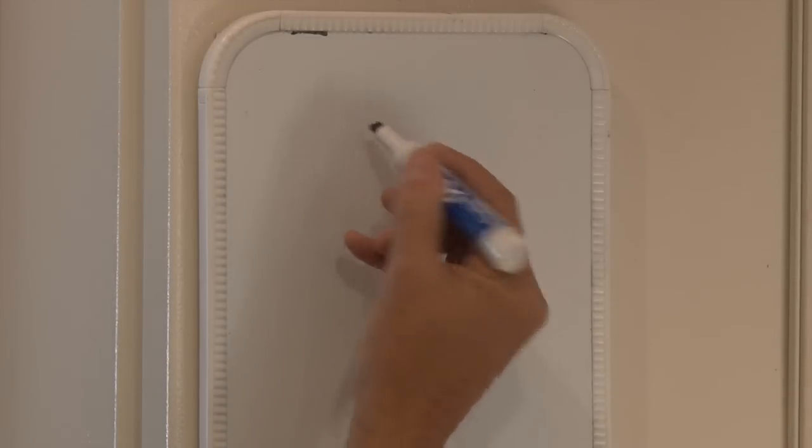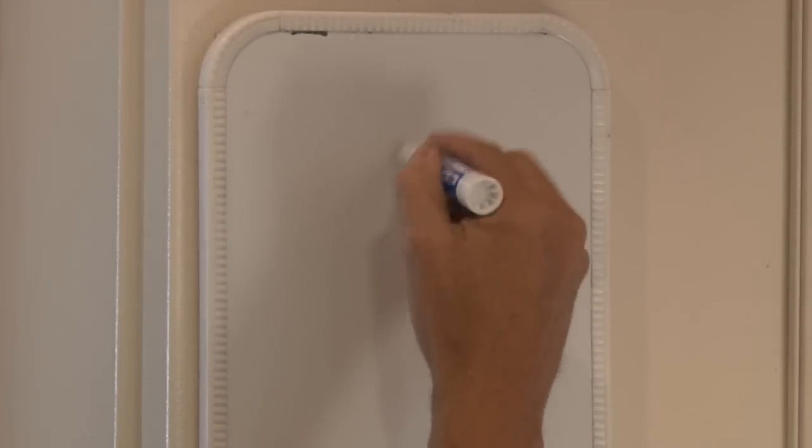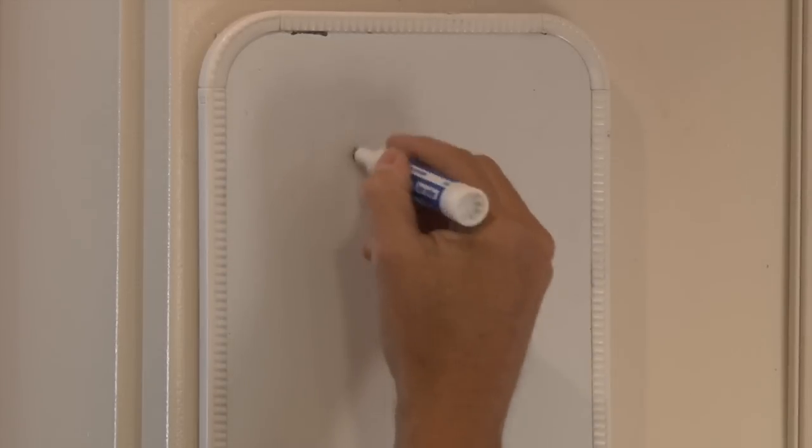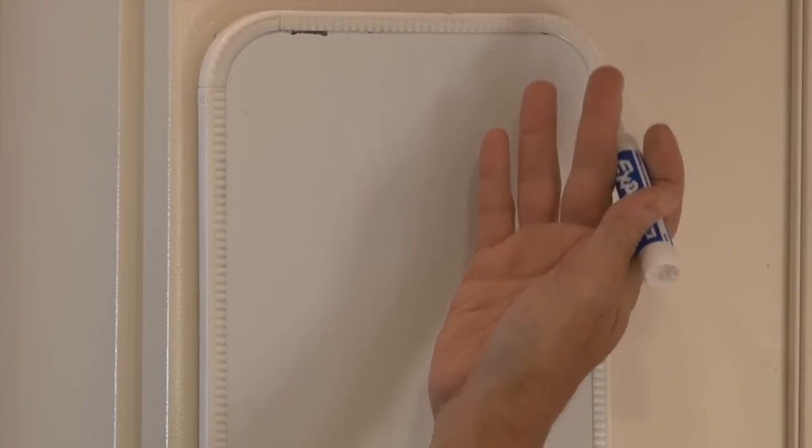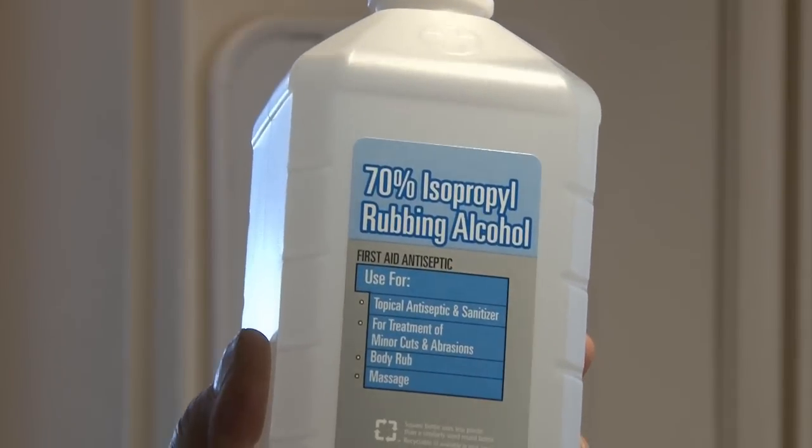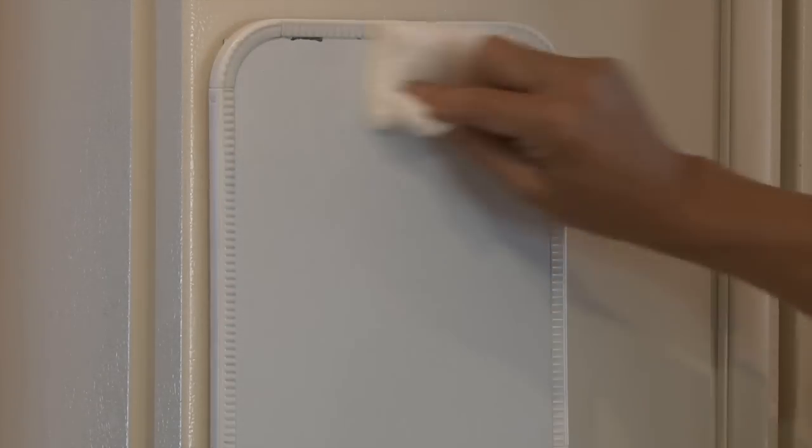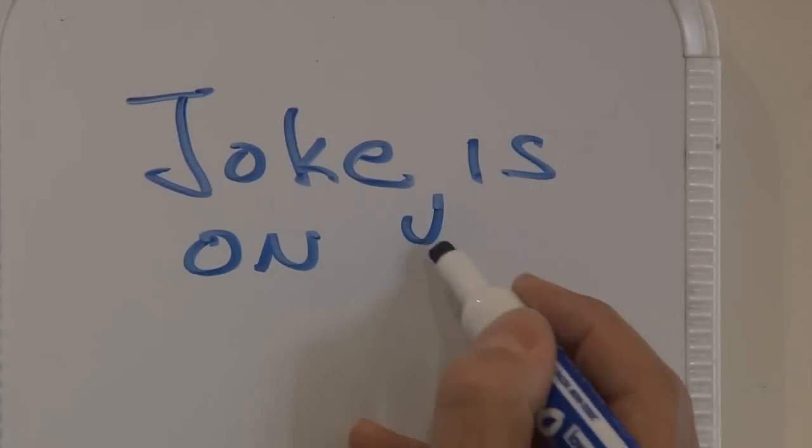The next time someone tries to write on the dry erase board, they're going to get nothing. The silicone in the car wax repels the marker ink and only you know the trick. To fix it, just rub it down with some rubbing alcohol. That takes the wax off and you can write on the board again.